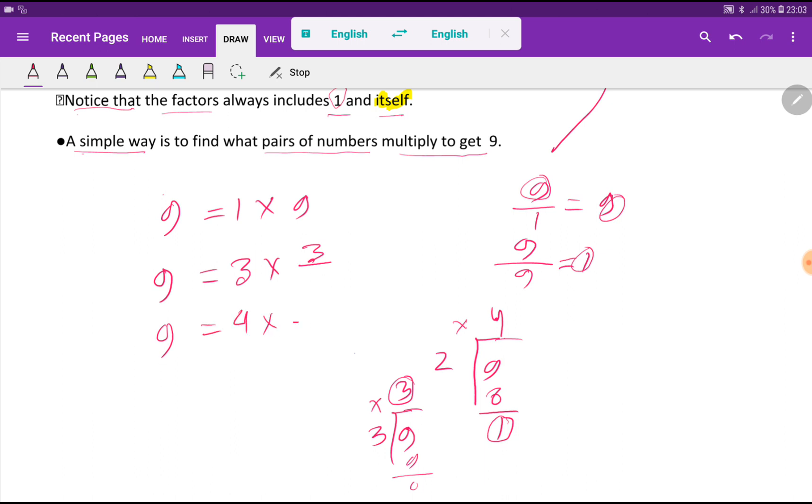Now look at here. If I take 4, then what will come? Should I continue? Look, if I square 4, then I am getting 16, which is greater than 9.